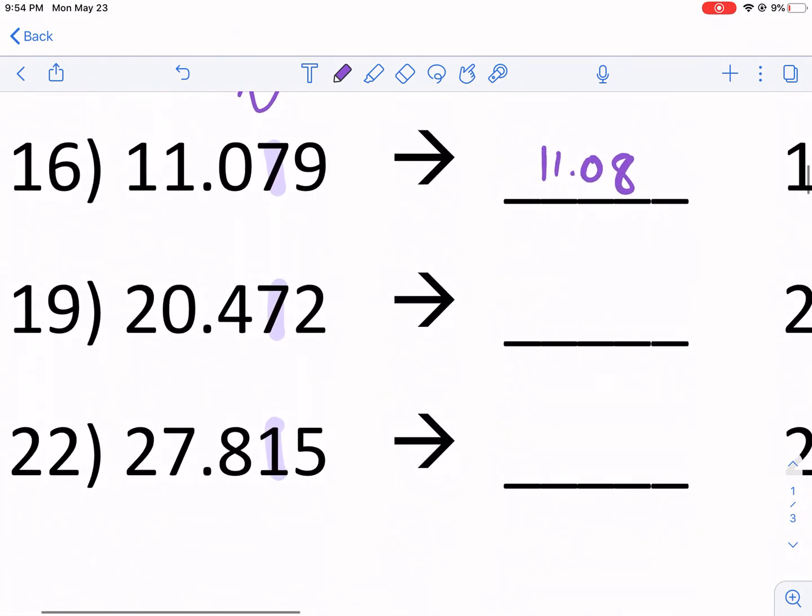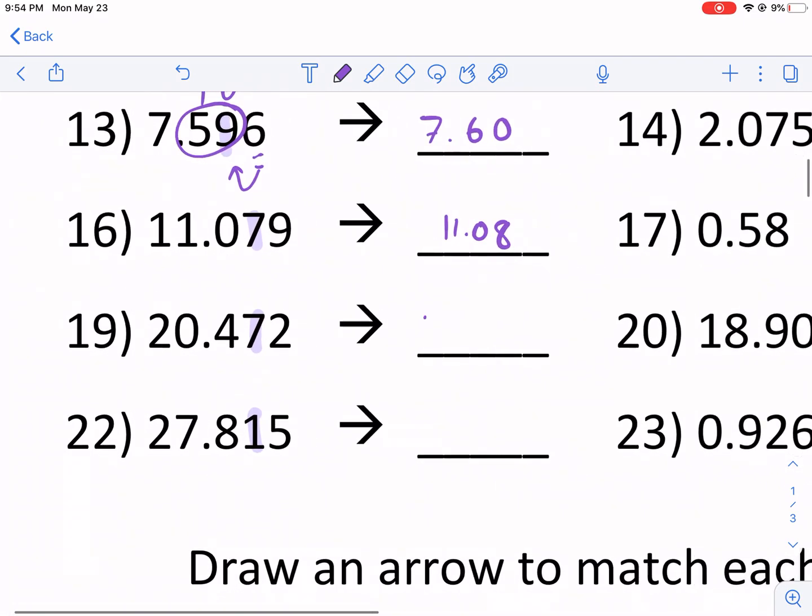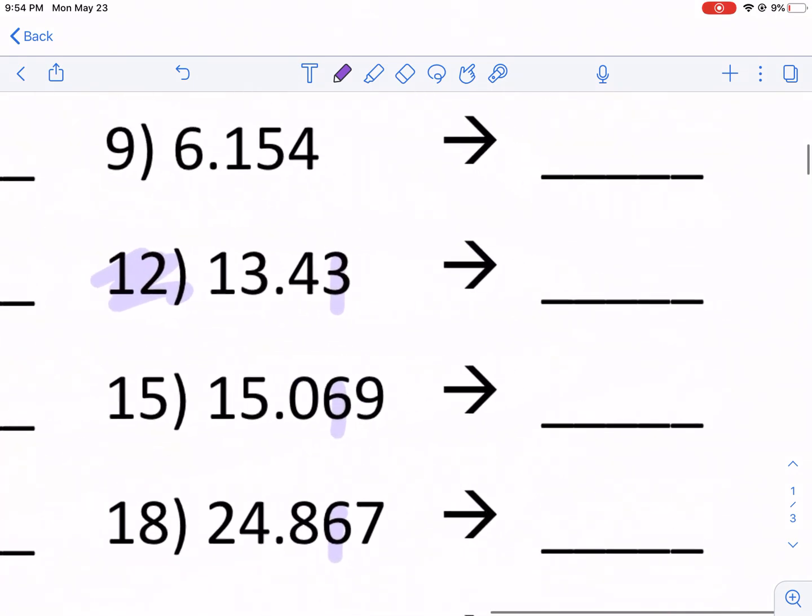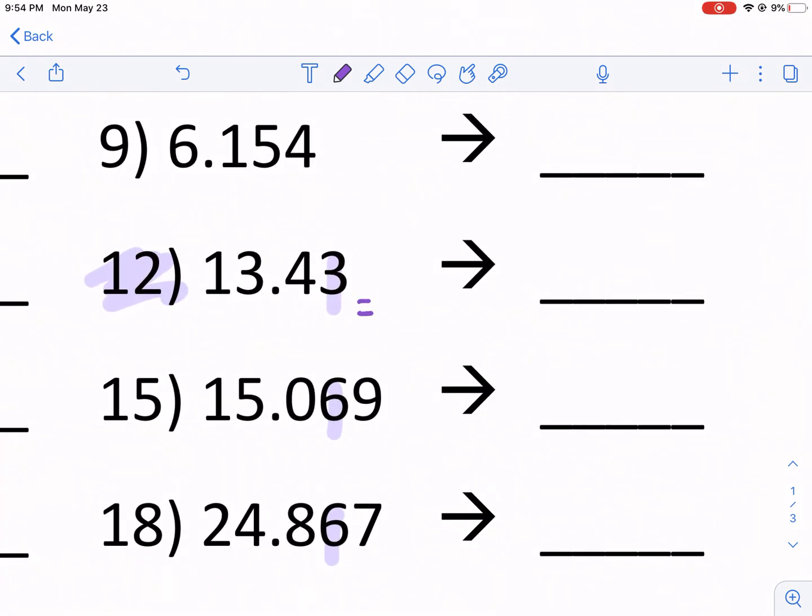11.08. Most of these are fairly straightforward. 20.4. Yep, I did that correctly. For 7, that one stays down. And then 27.82 because that 5 tells the 1 to round up. I wanted to go to number 12. Where's the number to the right? There is no number to the right. You could consider that a 0 to the right.